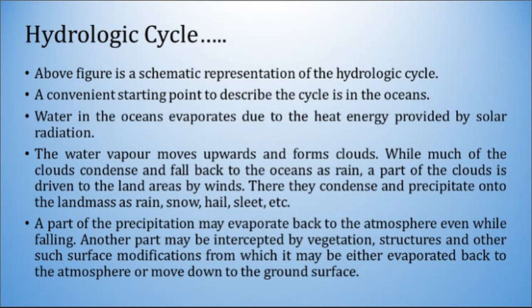In continuation of the hydrologic cycle, a convenient starting point to describe the cycle is in the oceans. Water in the oceans evaporates due to heat energy provided by solar radiation. The water vapors move upwards and form clouds, while much of the clouds condense and fall back to the oceans as rain. A part of the clouds is driven to the land areas by winds, where they condense and precipitate onto the land mass as rain, snow, hail, sleet, etc. — all of which are types of precipitation which we will study later.